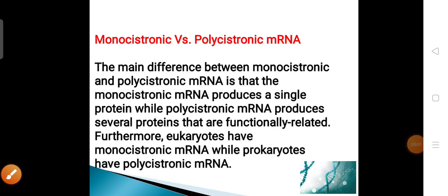Good afternoon dear students. Now we are going to study polycistronic and monocistronic genes, or polycistronic and monocistronic mRNA. The concept of the gene — what is a gene, what are cistron, mutron, recones, what are overlapping genes, what are split genes — we have discussed so far. Now let us discuss polycistronic and monocistronic genes and their mRNAs.